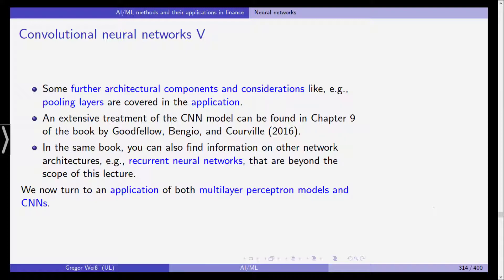Some further architectural components and considerations like pooling layers will be covered later on in the application. An extensive treatment is in the Goodfellow, Bengio, and Courville textbook. You can also find information on other network architectures like recurrent neural networks. These are beyond the scope of this lecture, but we will see both the multilayer perceptron, which is the simple extension of the single layer perceptron with more hidden layers, and the convolutional neural network in the application. You now have a basic understanding of what CNNs and multilayer perceptrons are. It's very simple to use these models in R, and we'll see this in the application.